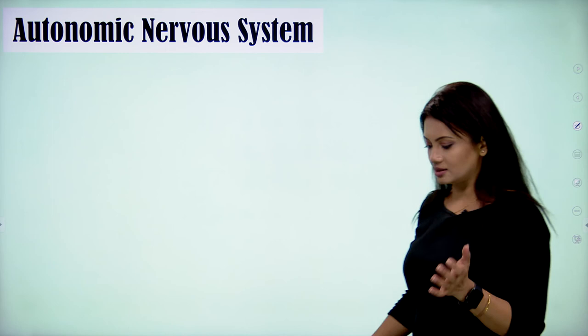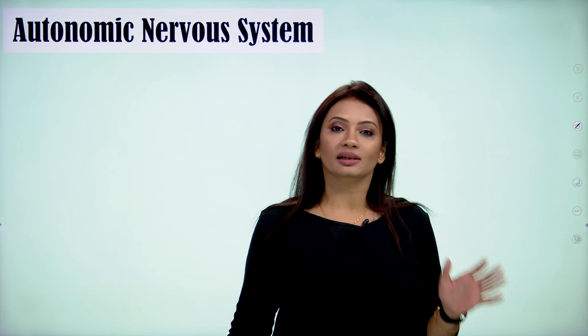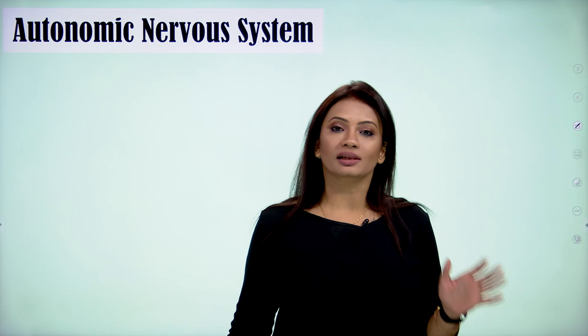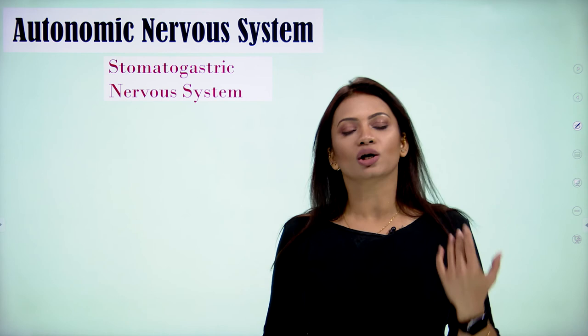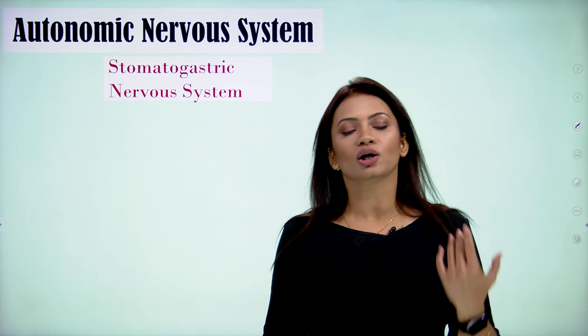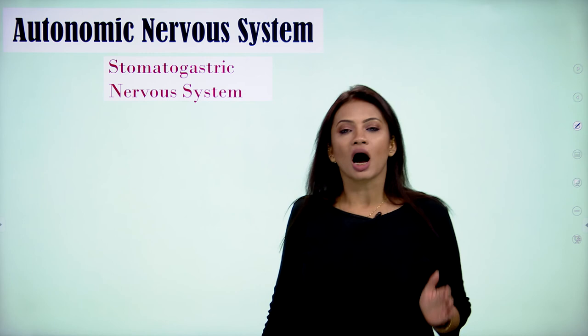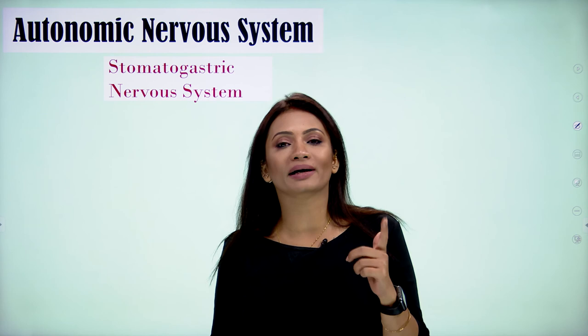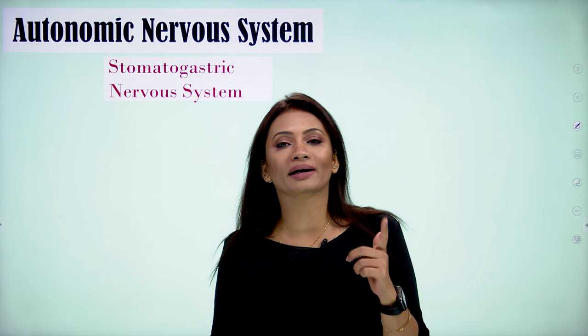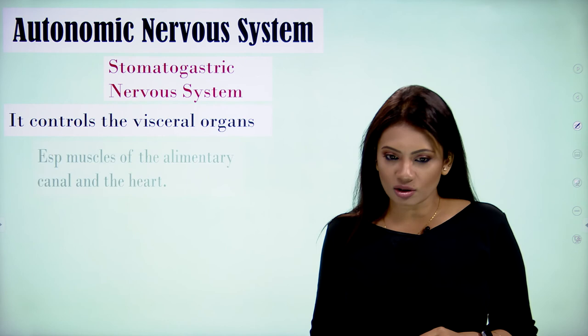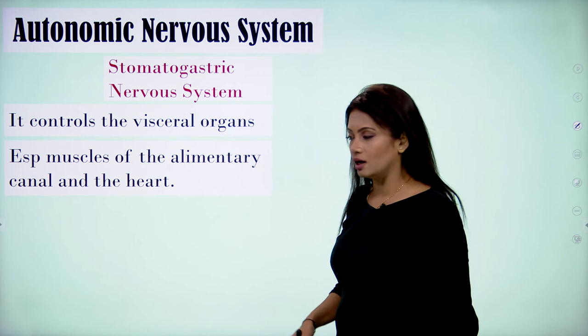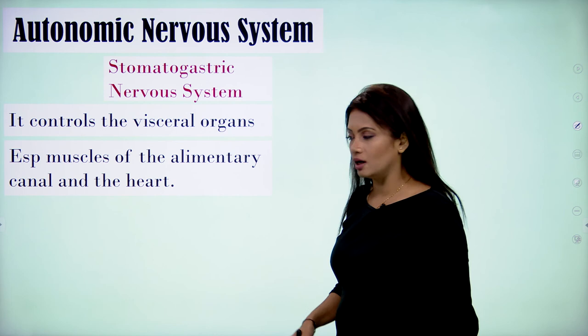After the central and peripheral nervous systems, we come to the autonomic nervous system. It can be called the visceral nervous system, or the stomatogastric nervous system. It controls the visceral organs — especially the muscles of the alimentary canal and the circulatory system (the heart), which is a 13-chambered tubular organ with alary muscles associated with it.